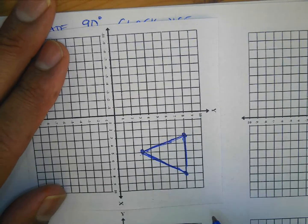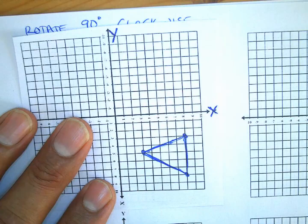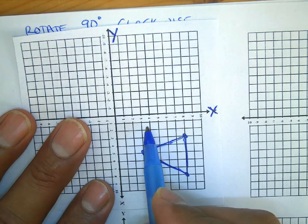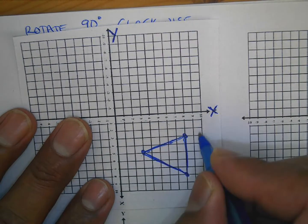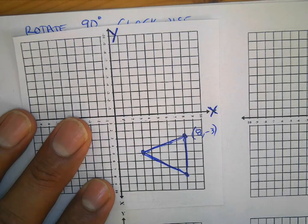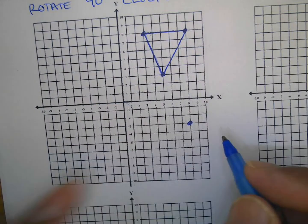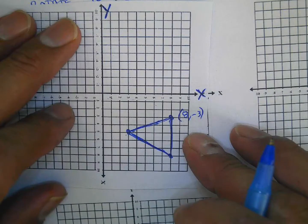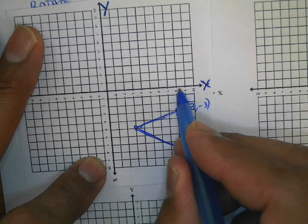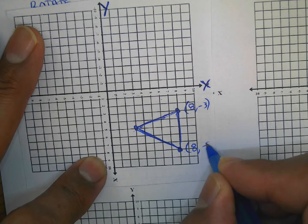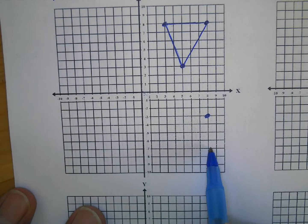Now I want to draw this. Pretend this is your x-axis and this is your y-axis, and get the coordinates. This would be one, two, three, four, five, six, seven, eight — and negative three. So that's (8, -3). I come back here and this one's at positive eight and down eight, so that's (8, -8).